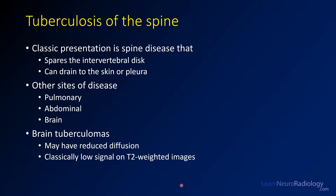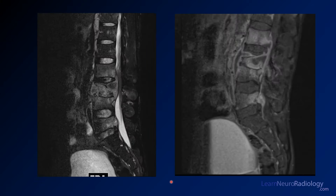This is a case of disseminated tuberculosis, and specifically tuberculosis in the spine. The classic presentation of spinal tuberculosis spares the intervertebral disc — you'll recognize that from the previous question. Patients can develop fistulas to the skin or pleura, and it's common to have involvement of other systems including the lungs, abdomen, and brain. Tuberculomas in the brain can have reduced diffusion, but their classic appearance is T2 hypointense lesions.